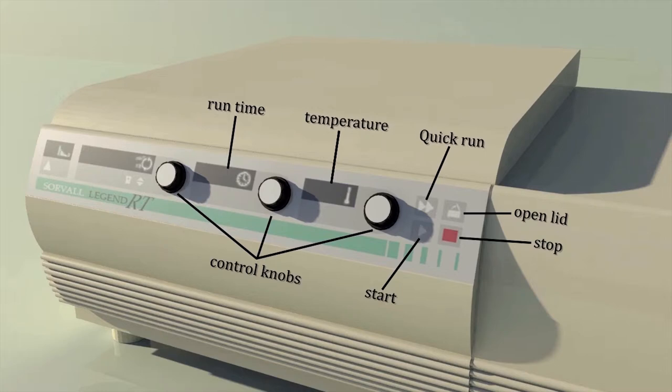The middle knob is to control runtime and the third knob on the right adjusts temperature. This particular centrifuge is refrigerated, so we can run from four degrees centigrade to ambient temperature.